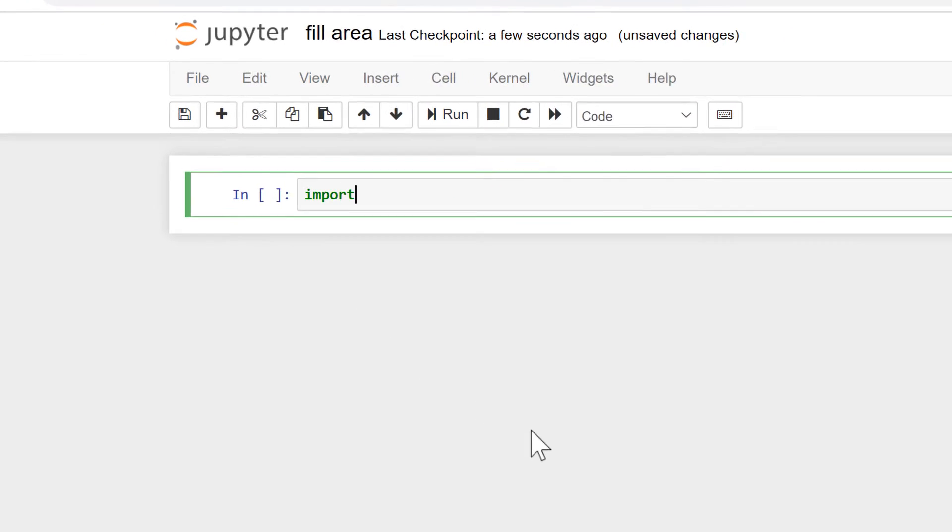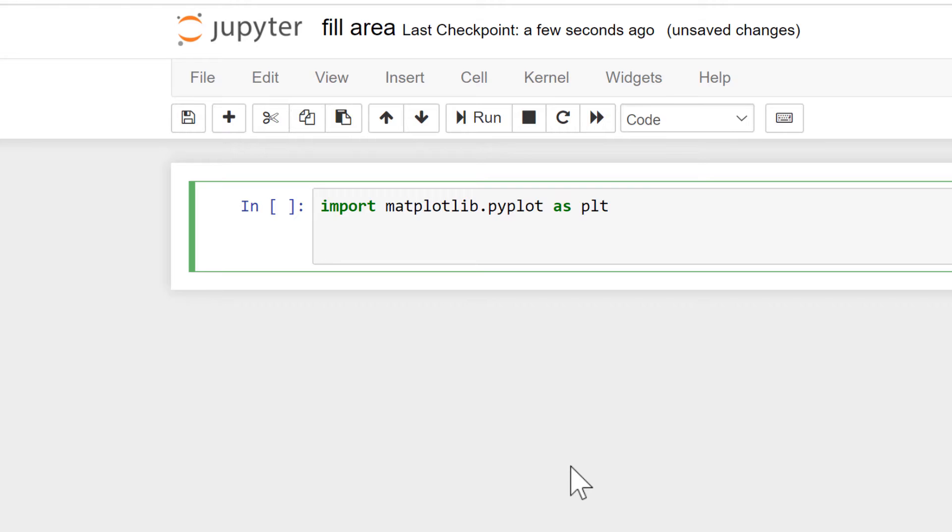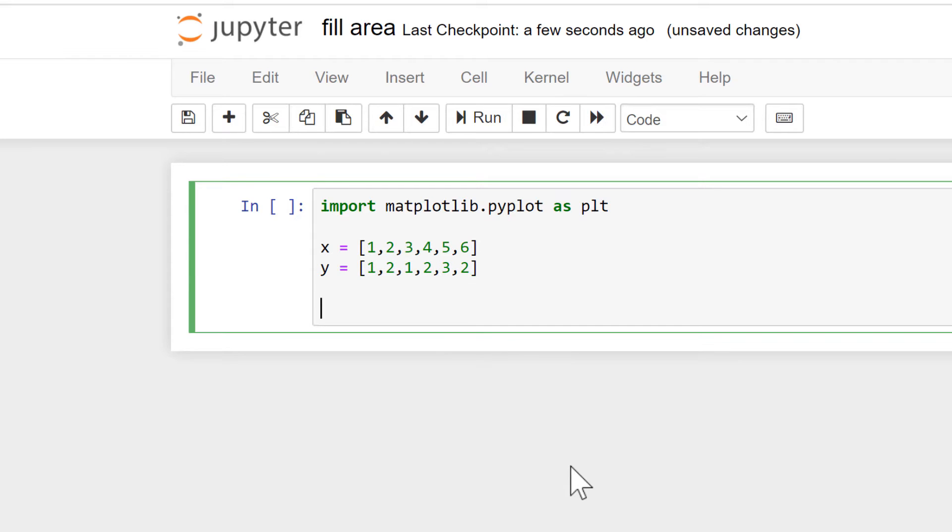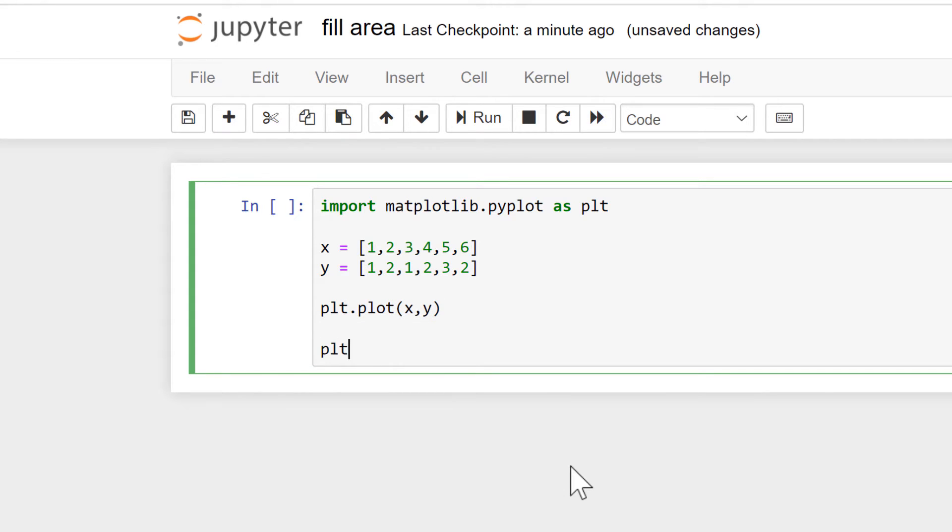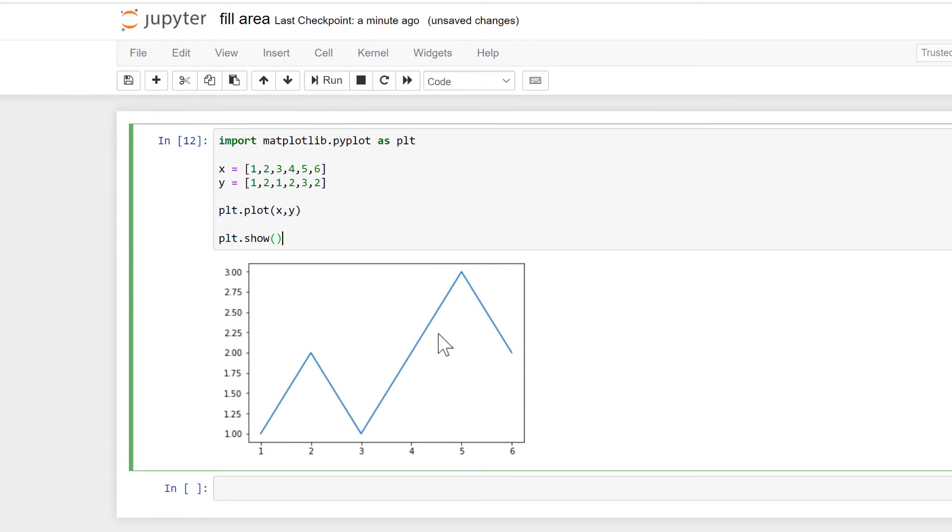Okay, so first of all, we will import matplotlib.pyplot as plt. And then we will create some X values and some Y values. Then we'll do plt.plot to plot the X and Y values, and then plt.show in order to show the plot. And we'll run this and we get a super simple plot.